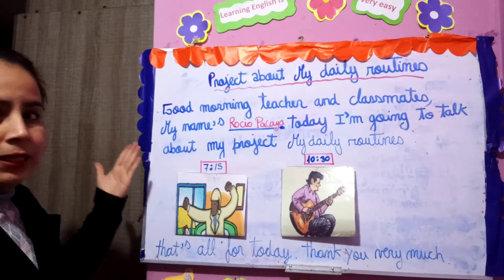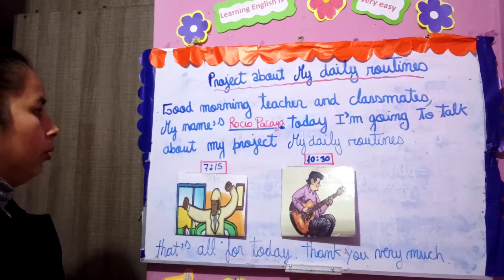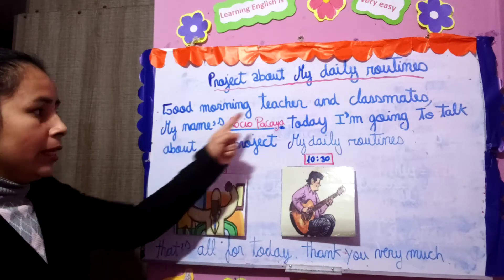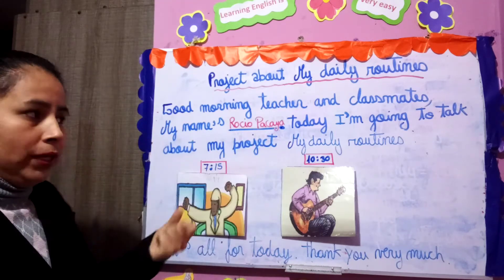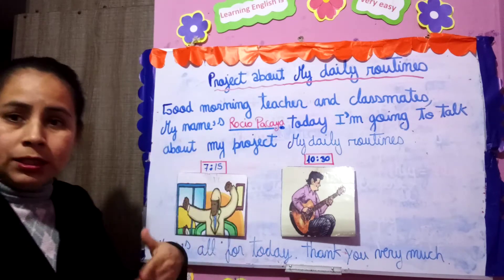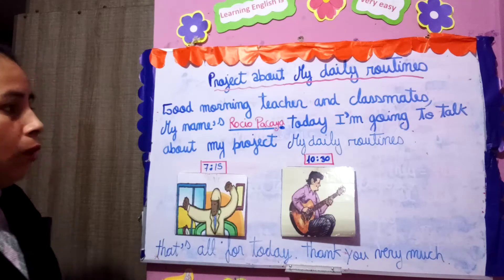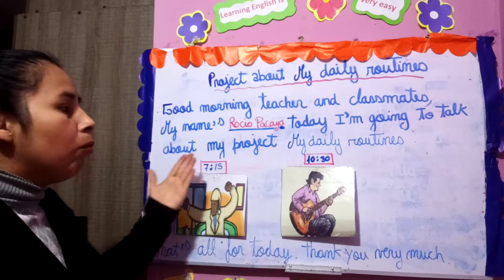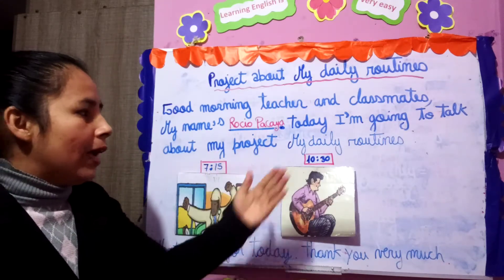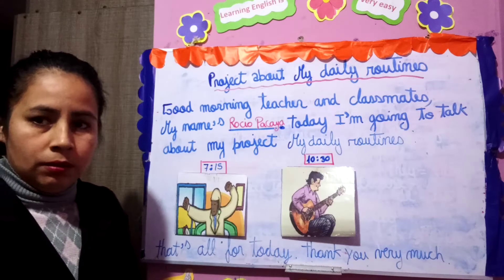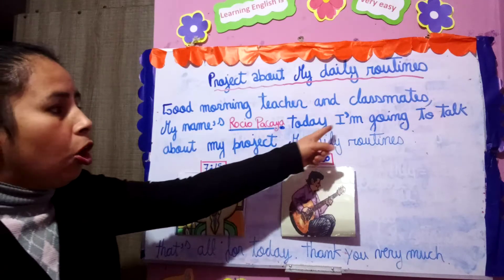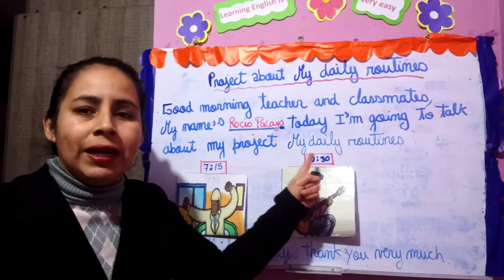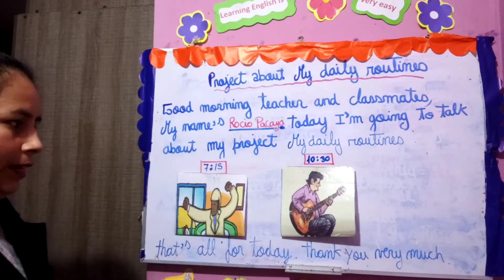¿Qué es lo que primero vas a decir? Por ejemplo, good morning teacher and classmates — buenos días, maestra y compañeros. My name is — vas a decir tu nombre y tu apellido. Luego: Today I'm going to talk about my project about my daily routines — el día de hoy vamos a hablar acerca de mi proyecto, my daily routines, mis rutinas diarias.